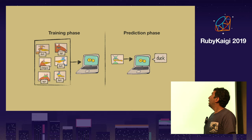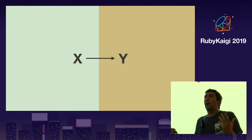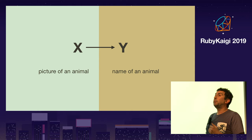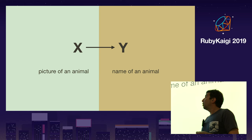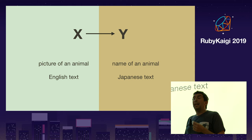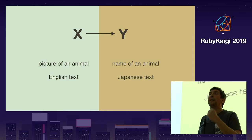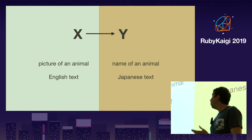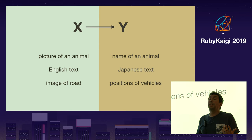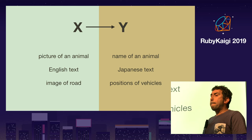That's just one example, but X and Y — the input and the output — can be a lot of different things. If your input is English sentences and your output is Japanese, and you have a system sophisticated enough to understand that with enough data, then congratulations, you just built Google Translate. Or the input could be the picture of a road and the output could be the positions of other vehicles.